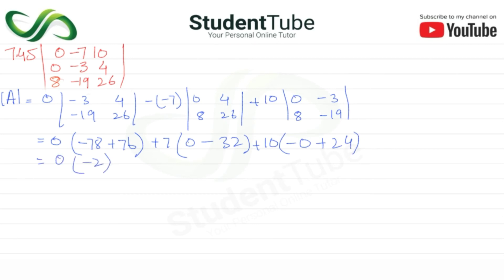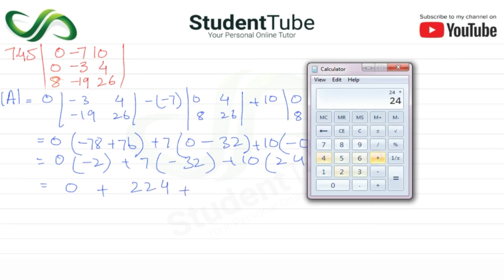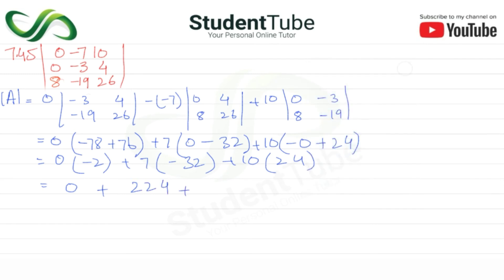By minus 2 plus 7, here minus 32 plus 10, and here 52 plus 7. Here minus 32 plus 24. 24 multiply by 10 is 240.